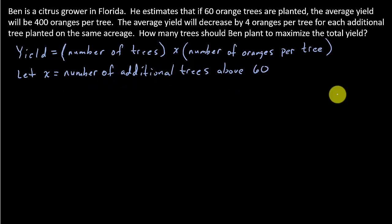So if we do that, we've got the number of trees on the acreage, well, that would be the estimated 60 that are planted plus each additional tree.